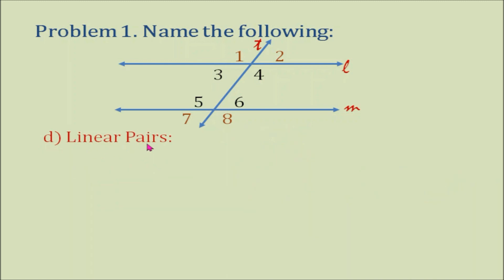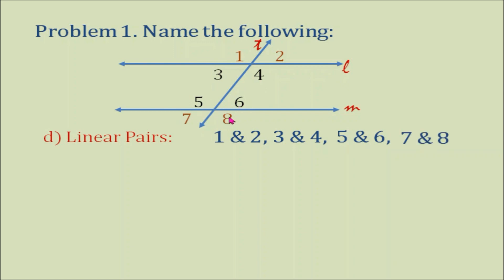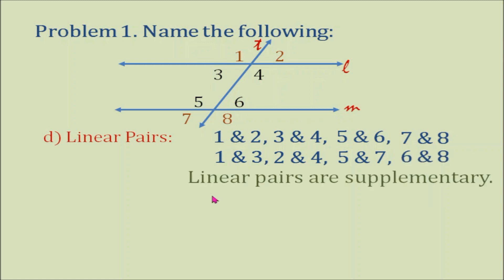How about linear pairs? We have many. The pairs are: angles 1 and 2, angles 2 and 3, angles 3 and 4, angles 5 and 6, angles 6 and 7, angles 7 and 8, angles 1 and 3, angles 2 and 4, angles 5 and 7, and angles 6 and 8. Let's be reminded that linear pairs are supplementary.